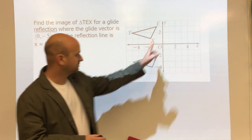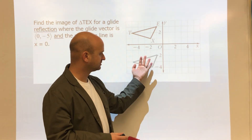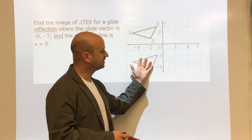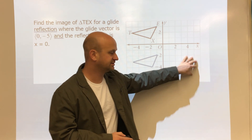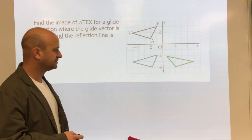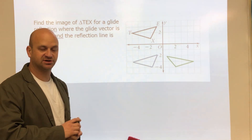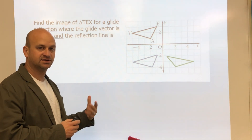For compositions, it's really important to know vertical and horizontal lines, so make sure to review those notes. X equals zero is this line, so we're going to take this triangle and reflect it over that line to here, and this is going to be the image of that composition.